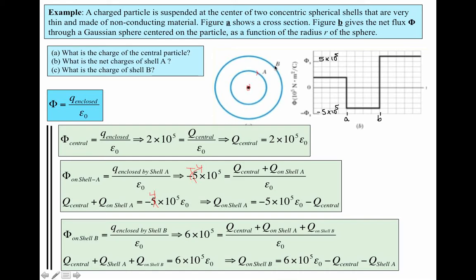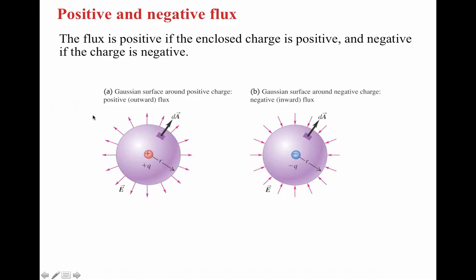For part (c), we find the charge on shell b using a Gaussian surface beyond b, which encloses all three charges: Q_central + Q_shell_a + Q_shell_b. The flux there is 6×10⁵, so: 6×10⁵ = (Q_central + Q_shell_a + Q_shell_b)/ε₀. Adding all charges together gives Q_shell_b. That's an application of the third expression of Gauss's Law.